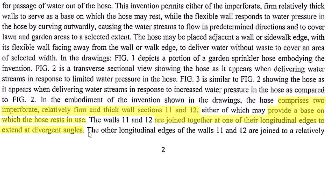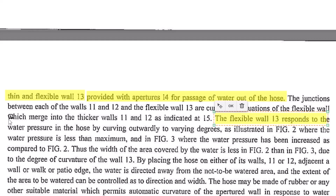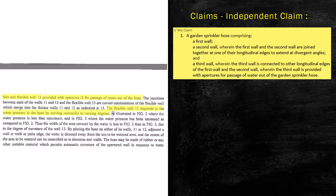We move forward to provide our third component. We say a third wall, wherein the other longitudinal edges of the first wall and second wall are joined to the third wall. We then add another wherein clause: wherein the third wall is provided with apertures for passage of water out of the hose. We can go further and say wherein the third wall responds to the water pressure in the hose by curving outwardly to varying degrees. This should make your claim 1.